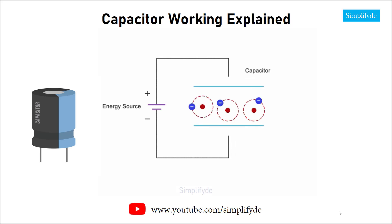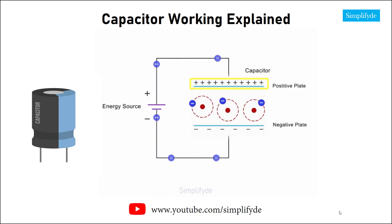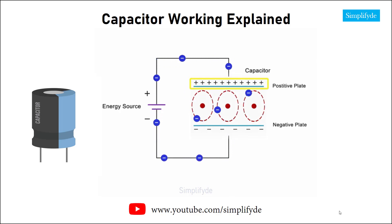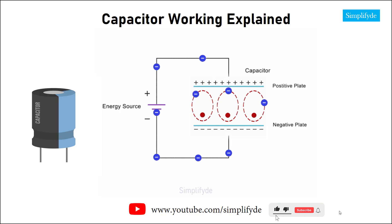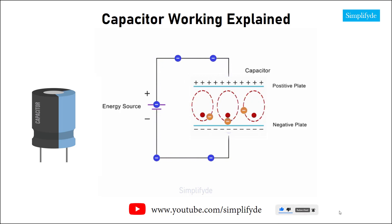Capacitors work to store energy by stretching the orbits of electrons in a dielectric compound between a positively charged plate and a negatively charged plate. As charge accumulates on the positive plate, the electrons of the dielectric material gravitate toward the positive plate, distorting their orbits. The attraction of the nucleus to the negatively charged plate further stretches the atoms. This process of distorting the orbit of the electrons uses energy that then becomes stored in the dielectric material.